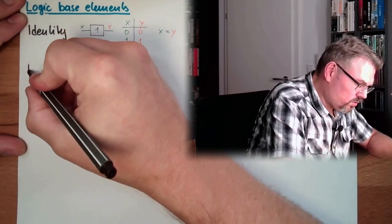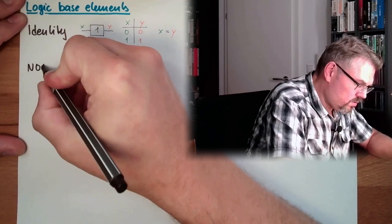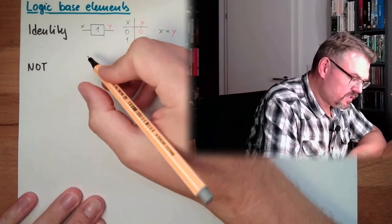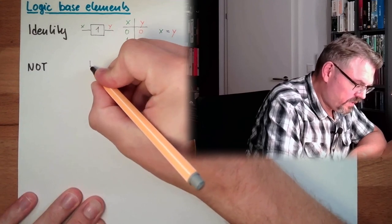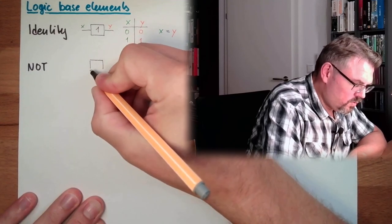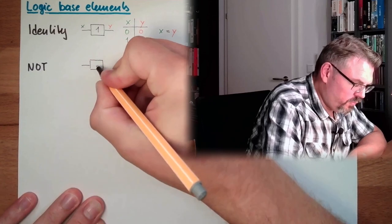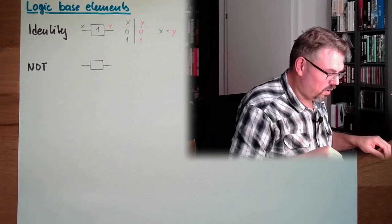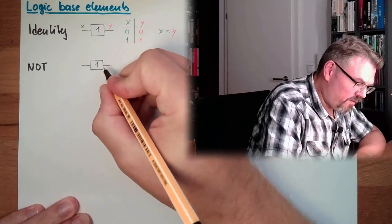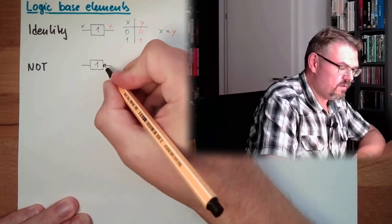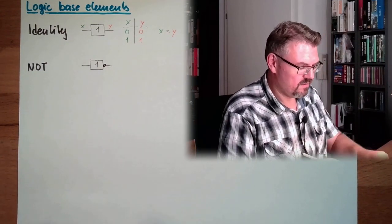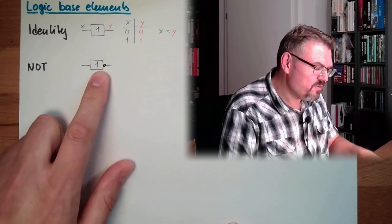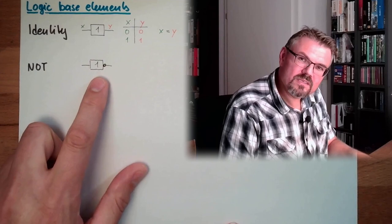Then there's another thing called NOT. It has pretty much the same symbol: one input, one output, and the symbol here is 1. However, there is a little ring at the end — this means NOT. Every time there's a ring, after the ring it's exactly NOT what is before the ring.